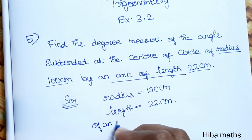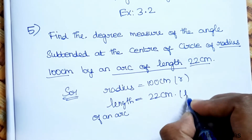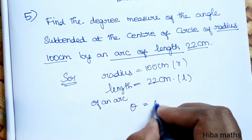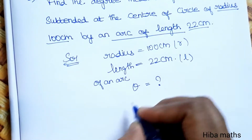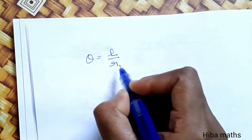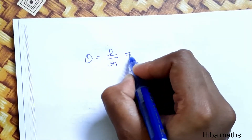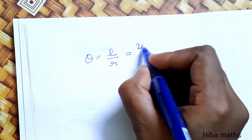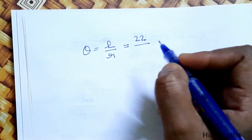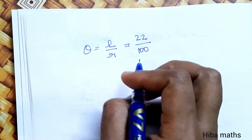Length of an arc: this is r and this is l. So theta is equal to L by R. The value of L is 22 and R value is 100, giving 22/100 radians.